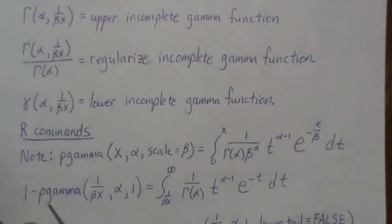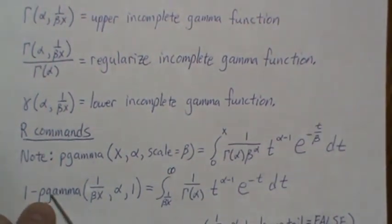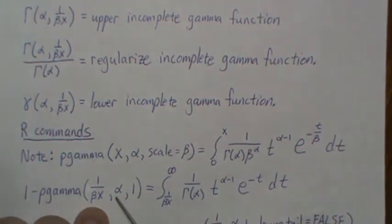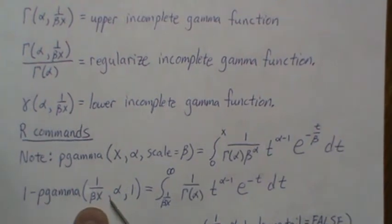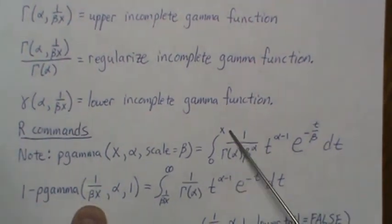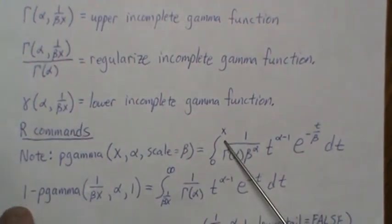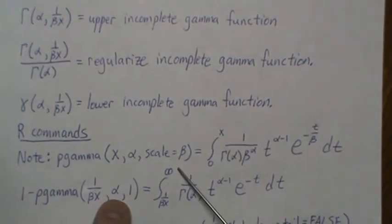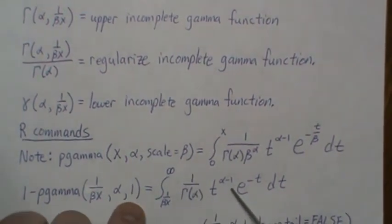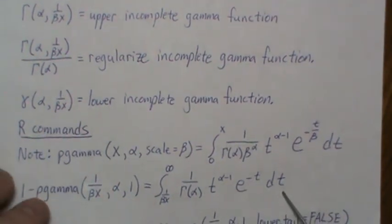So one minus P of gamma, and where this is a CDF, but we evaluate it at one over beta the X. But remember, this goes from zero to zero to that number, but the one minus makes it go from that number to infinity, alpha, and beta is one. And that's it.